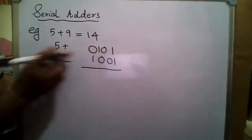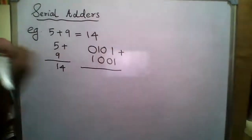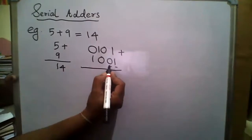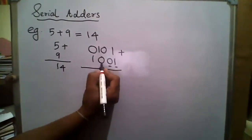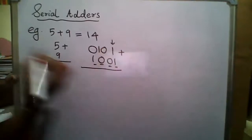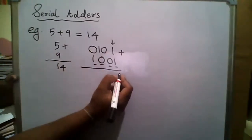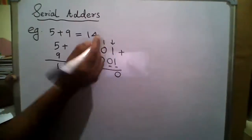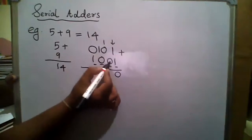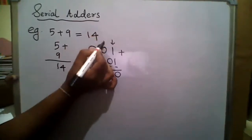In a Serial Adder, we are going to add 1 bit at a time. This is the equivalent binary addition. We add 1 plus 1, and the next part is the MSB. I will add that carry now. If there is 0 plus 0, the result is 0. I will add 1 from the previous carry.